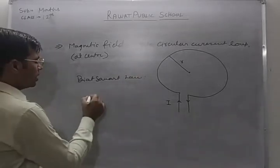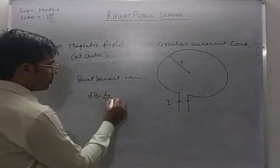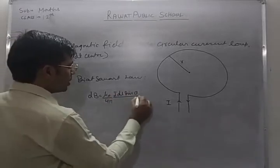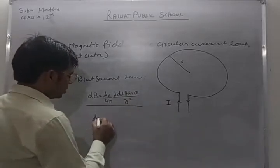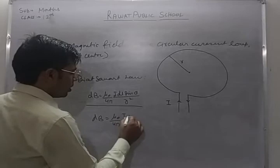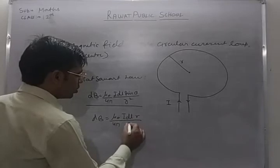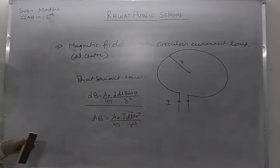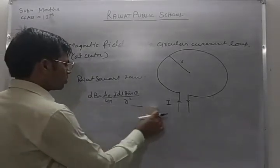We need to use Biot-Savart law. Biot-Savart law states: dB = μ₀/4π · I·dl·sinθ / r². We can also write this in vector form as dB = μ₀/4π · I·dl × r̂ / r³. We will use the scalar form for this derivation.